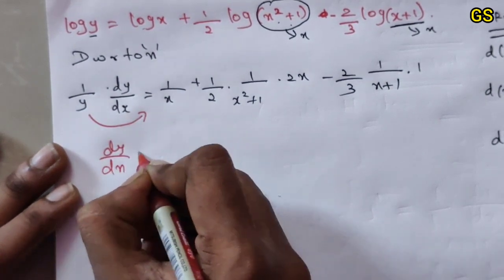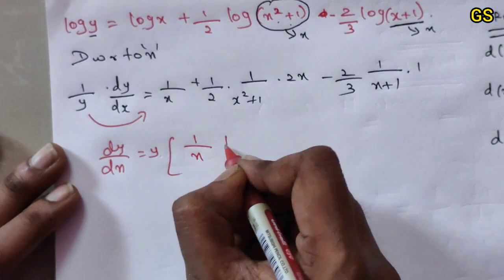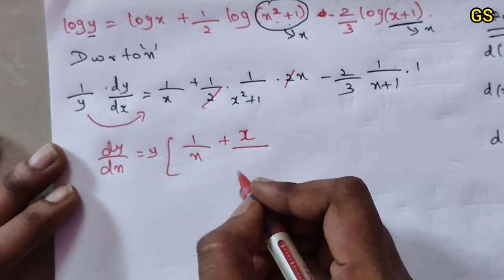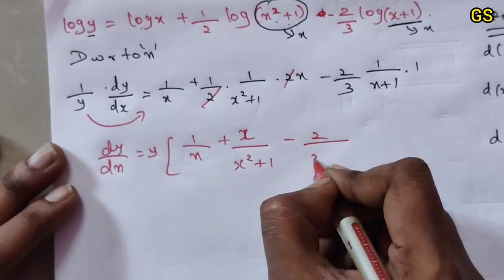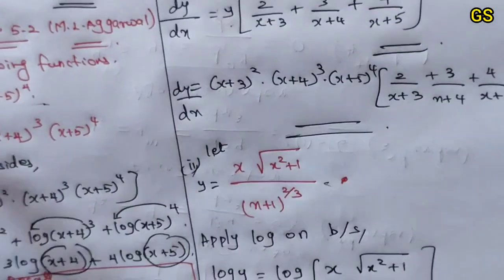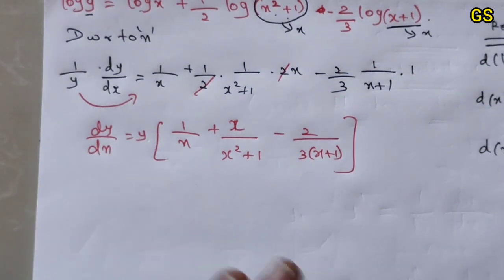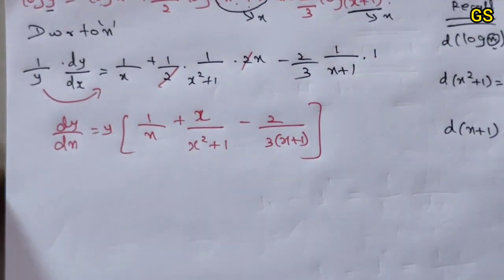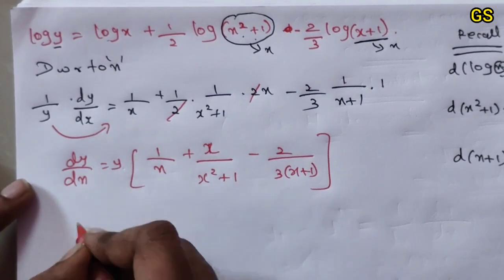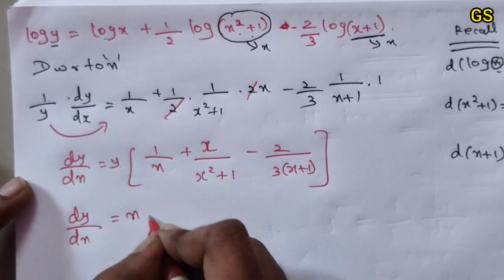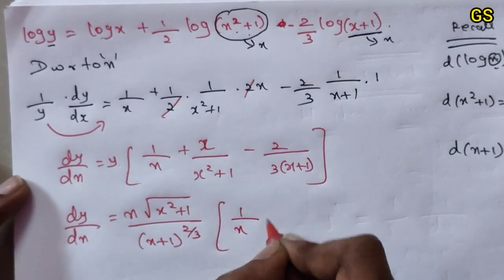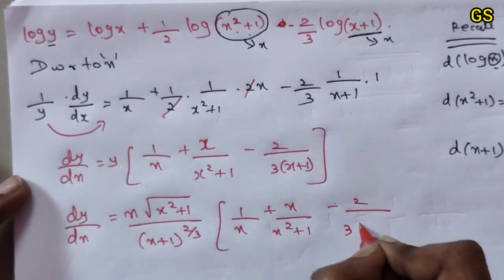So dy/dx equals y into [1/x plus (1/2)·(2x)/(x²+1) minus (2/3)·1/(x+1)], which simplifies to dy/dx equals y into [1/x plus x/(x²+1) minus 2 by 3(x+1)]. And y equals x·√(x²+1) divided by (x+1) whole power 2 by 3.